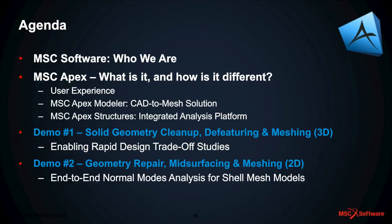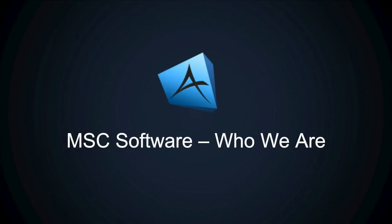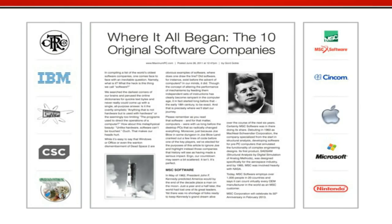MSC Software has been around for 54 years. We got our start back when NASA was sending rockets to the moon, and we were one of the 10 original software companies to ever exist. Of those 10, only five of us are still in existence: it's us, IBM, Apple, Microsoft, and Nintendo. The joke around the MSC Software office is that we get together once a year and give each other a high five for existing for another year, because in this day and age, being a software company that exists another year is a pretty big deal.